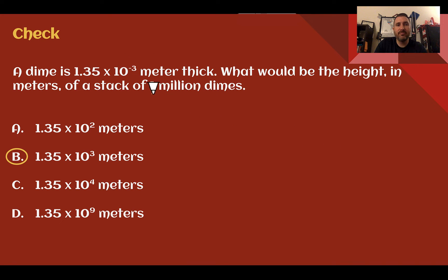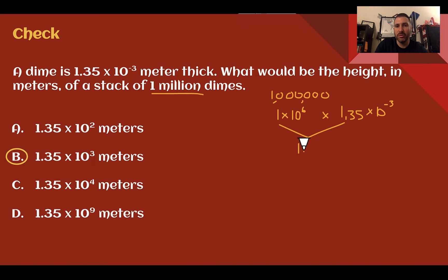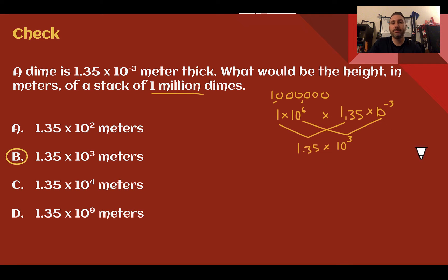Let's figure out how to get this. First, 1 million is written out as 1 followed by six zeros, which is 1 times 10 to the 6th. Now multiply that times 1.35 times 10 to the negative 3. Multiply the factors together: 1 times 1.35 is 1.35. Then 10 to the 6 times 10 to the negative 3 — we add the exponents: 6 plus negative 3 is 3. So 10 to the 3. The result is 1.35 times 10 to the 3rd power, which was B.